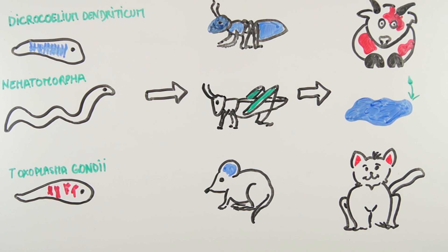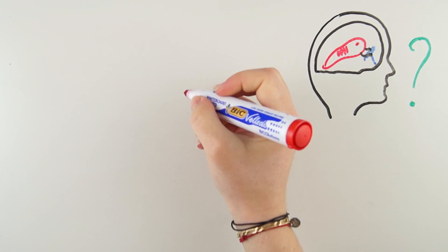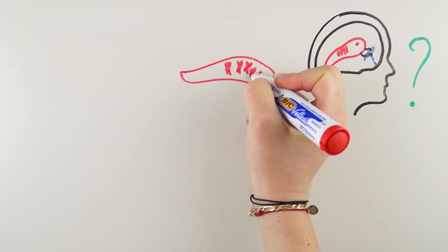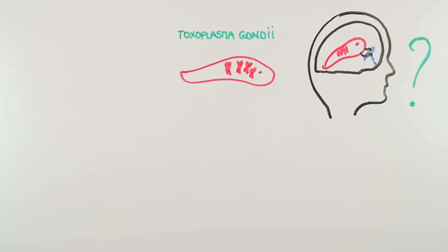Could the same thing happen in humans? Could a parasite hack our brain? Well, the last parasite we've just seen, Toxoplasma gondii, can actually infect humans in addition to mice, and it is estimated that around one third of the world's population could be infected.